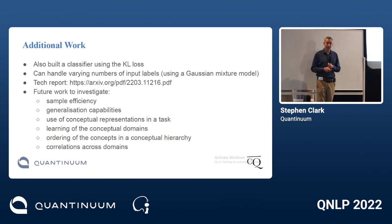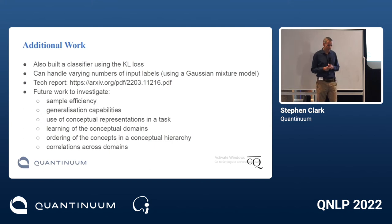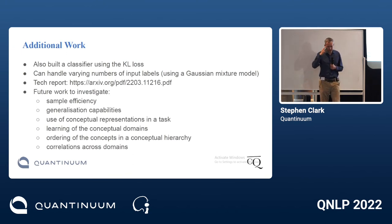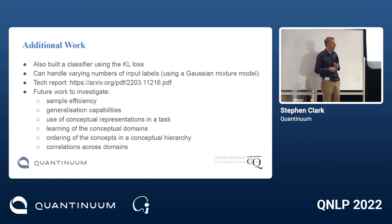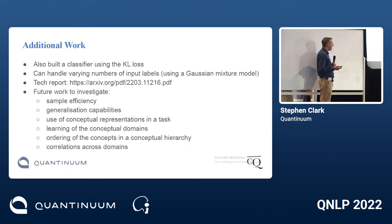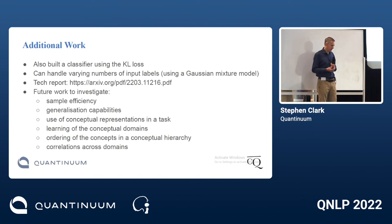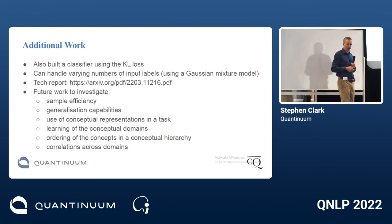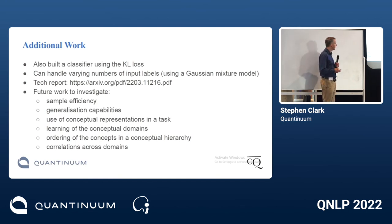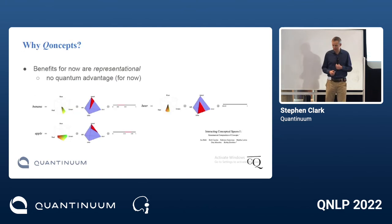Another future direction is building an ordering on concepts — for example, having 'dark red' as a sub-concept of 'red' in a hierarchy. This is tricky because you then have to ask how to order Gaussian distributions, which turns out to be quite hard. We'd also like to capture correlations across domains, for example: a banana is either a sweet yellow fruit or a bitter green fruit, so the color and taste are correlated in the concept definition.